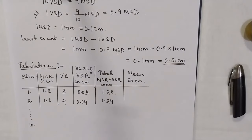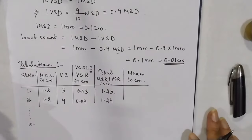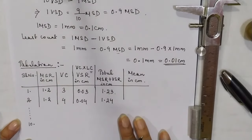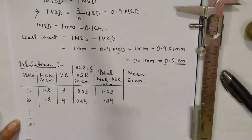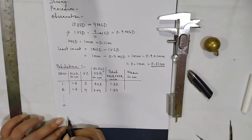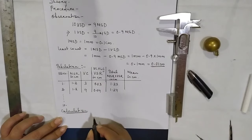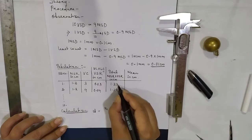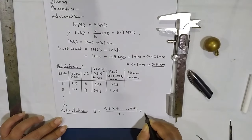Likewise, you need to take 10 observations. We take 10 observations to increase the accuracy and decrease personal error that we might commit while measuring. In order to avoid personal error and increase accuracy, we take 10 observations and then calculate the average. The mean is nothing but the average of these 10 observations: Mean diameter D = (x1 + x2 + ... + x10) / 10.